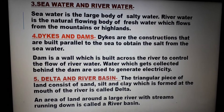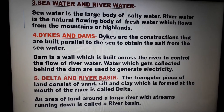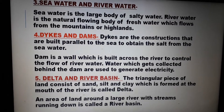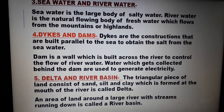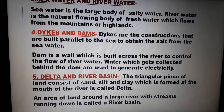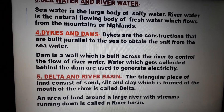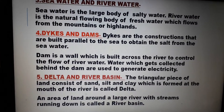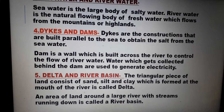Number 4 — dikes and dams. Dikes are constructions that are built parallel to the sea to obtain salt from the sea water. A dam is a wall which is built across the river to control the flow of river water. Water which gets collected behind the dam is used to generate electricity.